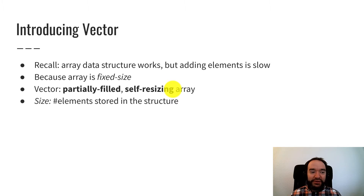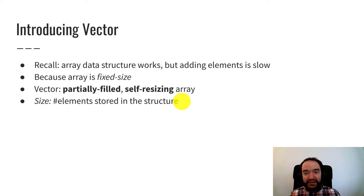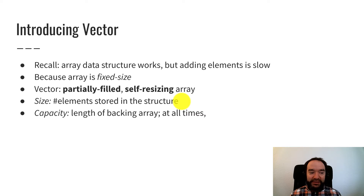There are two different words for two different concepts regarding the number of elements, and we have to keep these straight. Size is the word we use for the number of elements stored in the structure — what the user of the vector sees, the number of elements they put in and expect to be stored safely. Capacity is a different number: it's the length of the backing array, which is the array we're creating to hold elements.